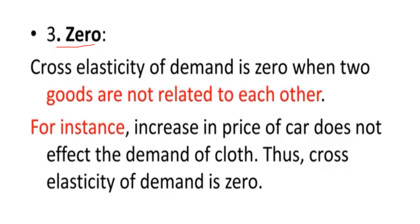The last degree is zero cross elasticity: the cross elasticity of demand is zero when two goods are not related to each other. For example, an increase in the price of a car does not affect the demand for clothes, because these are entirely different products. Thus, cross elasticity of demand is zero when products are not related to each other.